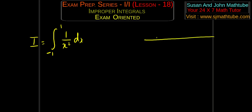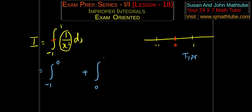Now look at this — I want you to analyze, I want you to think about all the numbers between minus 1 and 1. When will this function become infinity? At 0. So basically 0 is the villain, and it is in between — exactly at the middle. In such problems the first thing to do is — I will call it type 2 special case. In type 2 special case what you do is, you find the troublemaker and use the properties of definite integrals and split it into two, so that both integrals will become type 2 simple problems. The end point will be the troublemaker — I made the midpoint into the end point.